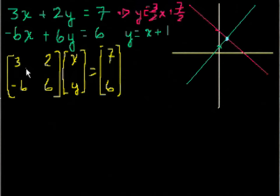So this is essentially saying that 3. So what do you do? You get your row information from the first matrix, column information from the second matrix. So this is saying 3 times x plus 2 times y is equal to 7. Well that's exactly what we wrote up here. 3 times x plus 2 times y is equal to 7. And similarly, when you multiply the bottom row, you get minus 6 times x plus 6 times y is equal to 6.